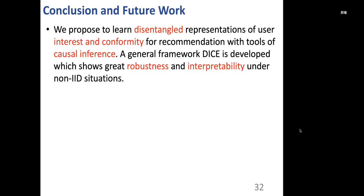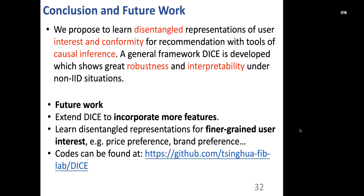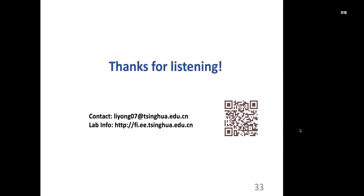To summarize, we propose to learn disentangled representations of user interest and conformity for recommendation with tools of causal inference. A general framework DICE is developed which shows great robustness and interpretability under non-IID situations. In the future, we plan to extend DICE to incorporate more features and learn disentangled representations for finer-grained user interest. Codes can be found at this link. Thanks for listening, and here are some contact information of our lab.